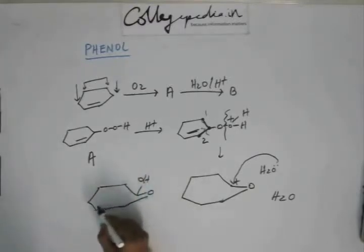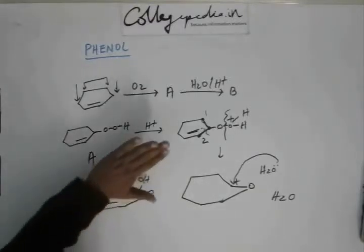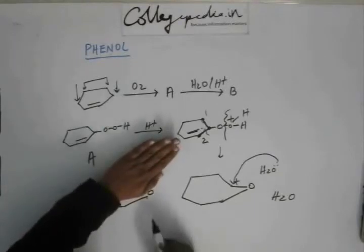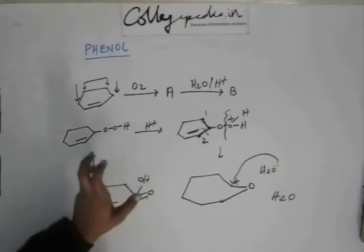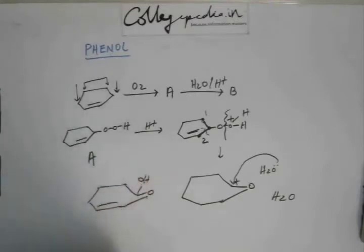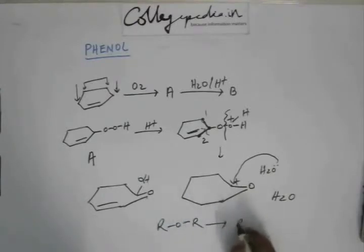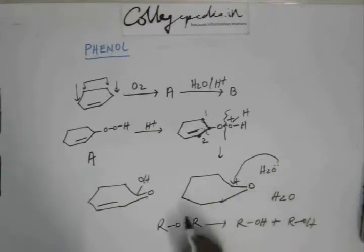And then what will happen is what happened earlier. If I hide this OH, now you consider this as a cyclic ether and both the parts are going to come out as OH and OH. That's what happens in hydrolysis of ether. Like if you have R-O-R, if you hydrolyze it, both halves are going to come out as ROH, ROH. You break it like this. This comes out as alcohol and the other half also comes out as alcohol.